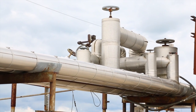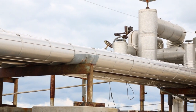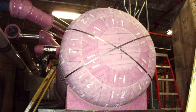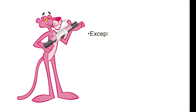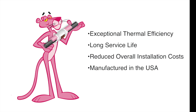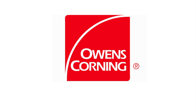Extruded polystyrene doesn't collect the moisture, resists the moisture, and in fact will maintain its R-value. Whether a large or small scale application, you have a choice for your XPS pipe insulation requirements. Owens Corning insulation is a high performance, dust free foam product with exceptional thermal efficiency, long service life, and reduced overall installation costs, manufactured in the USA. Choose pink insulation for your next XPS pipe insulation job.